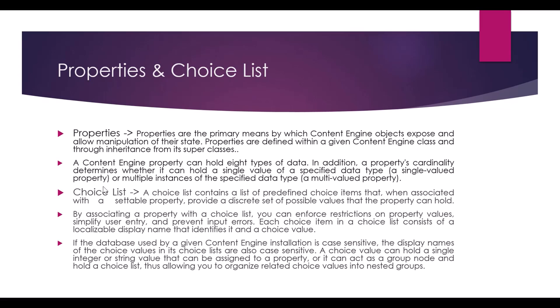After that, the choice list. In a property you can put only one value, but a choice list is like a dropdown where you can choose a value. For example, I've created a choice list for 'Department' with values like Accounts, Trail, State, HOD's department, and other departments. If I attach this property to the class, then during document creation the value entered must match the choice list values - otherwise the document creation will fail. That's the choice list.